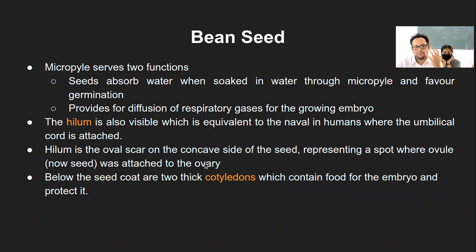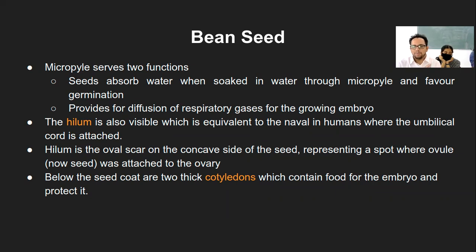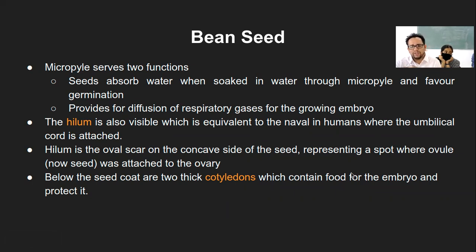When the ovule was present, we know ovules can be many and they are attached to the ovary in different positions — that is what we had seen in terms of placentation. Depending on how many ovules are present, the placentation can be different, and the connection point between the ovule and ovary indicates the hilum part. Hilum function is just to connect the ovule to the ovary.